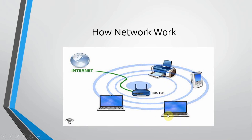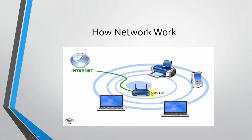For example, if this laptop wants to connect to Google, it is going to send a request to the router that it wants to access www.google.com. The router is then going to forward that request to the internet. The internet sends the data back in a packet to the router, and then the router sends the response of www.google.com back to the laptop. That is how a network is actually working.